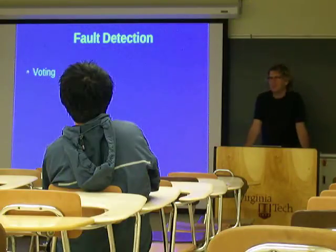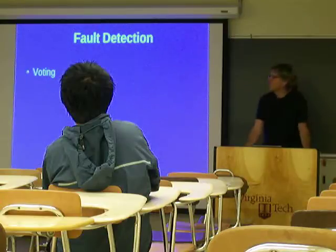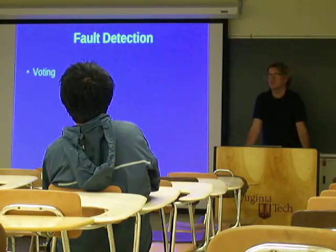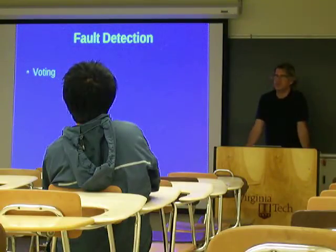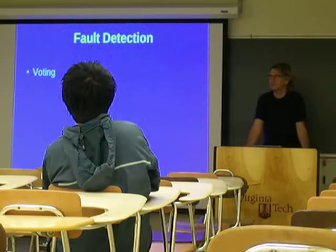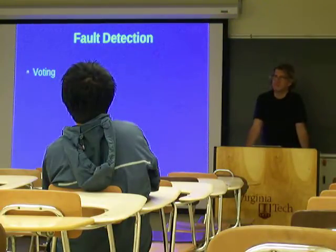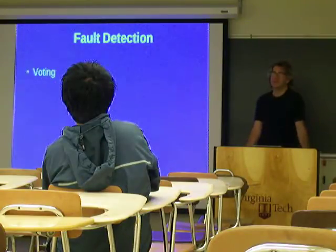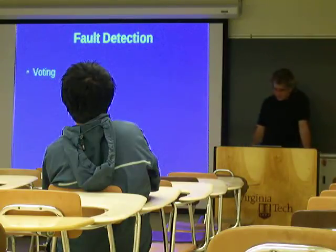Detecting faults is the first problem — how do you know when something's gone wrong? The most basic approach is voting: run three copies of your circuit and compare the outputs. If two agree and one disagrees, you're probably safe assuming the one that disagrees is wrong. If you get a one, a one, and a zero, the answer is probably one, and something went wrong with the zero.